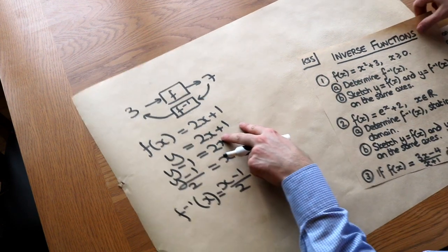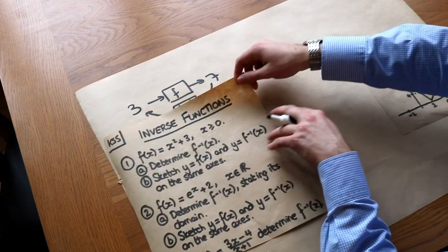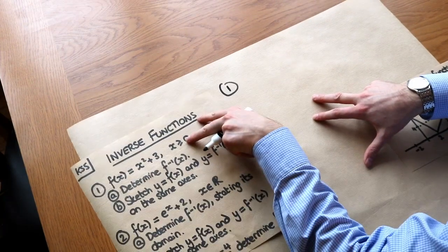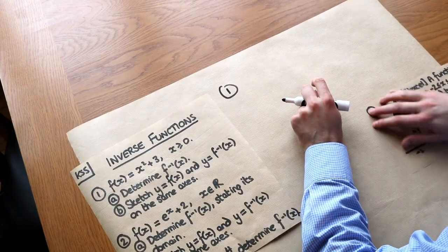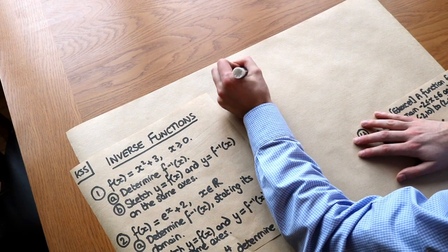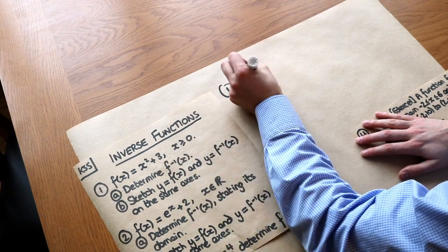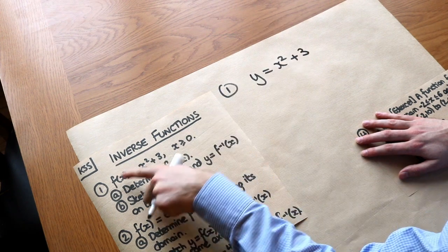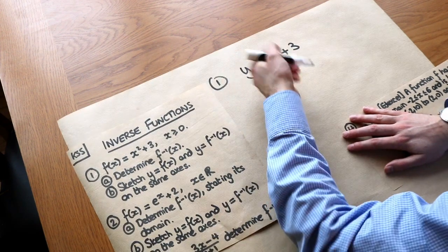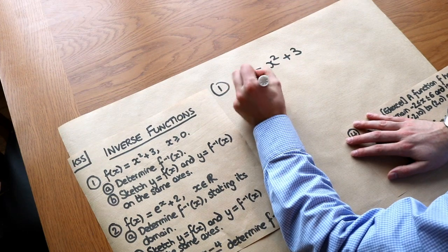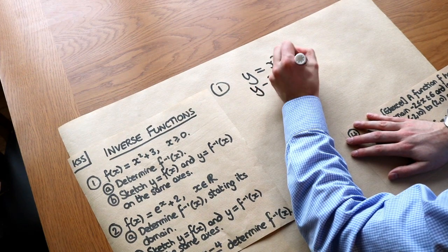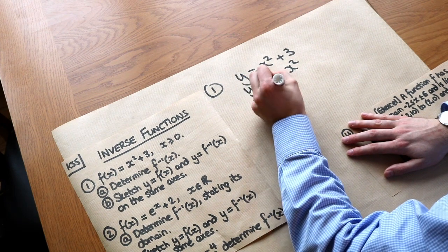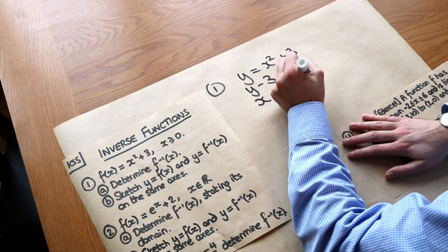There are a few extra principles we'll see in this video that apply at A-level. We have f(x) = x² + 3; determine the inverse function. We write y = x² + 3 — the first step is just to replace f(x) with y. Now we make x the subject: minus 3 from both sides, then square root both sides, giving x = ± √(y − 3).